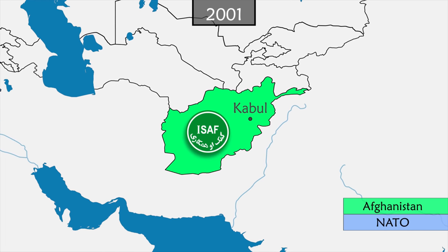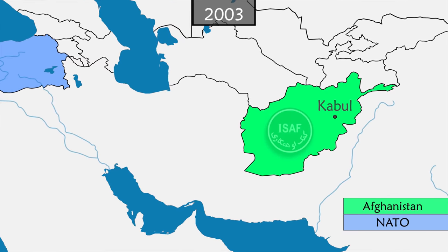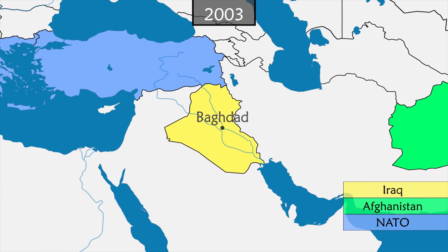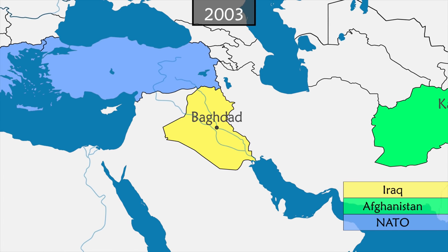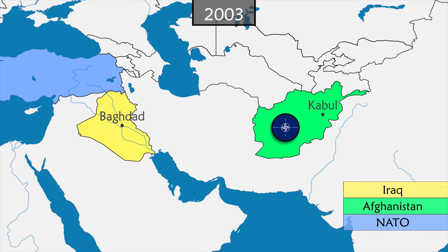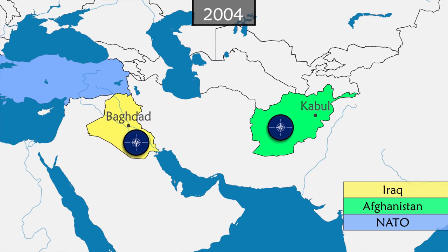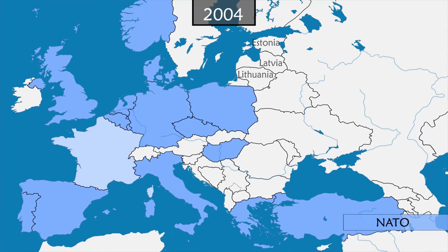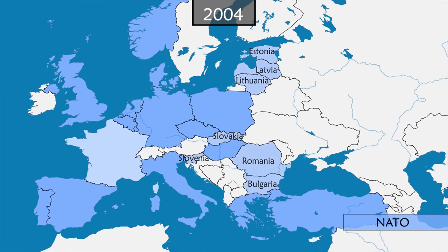After taking control of the capital Kabul, international forces are deployed to assist a new government in taking control of the entire country and to maintain security. Two years later, the United States launches another offensive against Saddam Hussein's Iraq; in two months, Baghdad falls. NATO is called upon to take command of the international force in Afghanistan and to train and supervise Iraq's new troops. In 2004, the Baltic states, Slovakia, Slovenia, Romania, and Bulgaria join NATO.